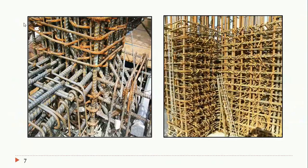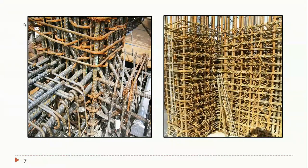If you see reinforcement cages present in the site for columns, lifts, or beam-column joints where the spacing between reinforcement is very small, you cannot use conventional concrete effectively. If the needle vibrator cannot penetrate between the two reinforcement bars, it becomes very difficult to achieve 100 percent compaction. That is why self-compacting concrete was introduced.